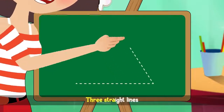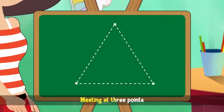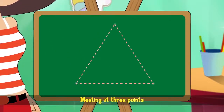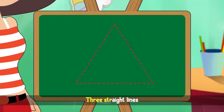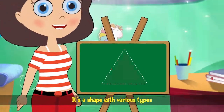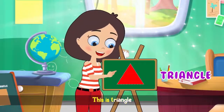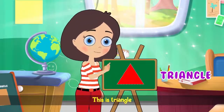Three straight lines meeting at three points. It's a shape with various types. This is triangle!